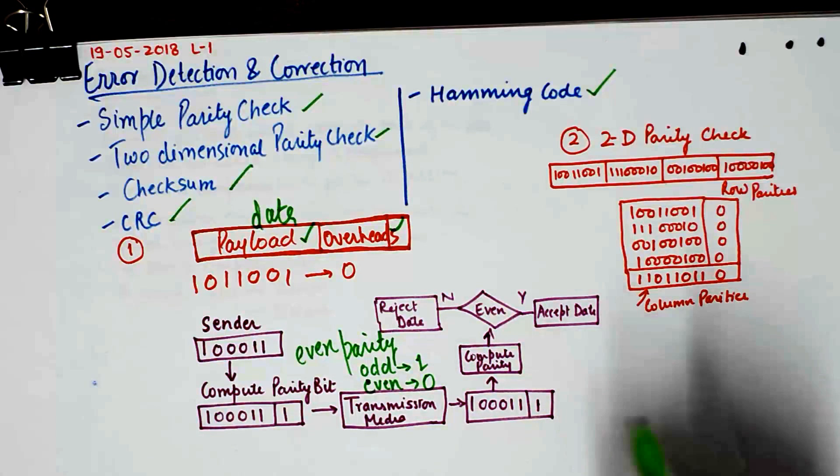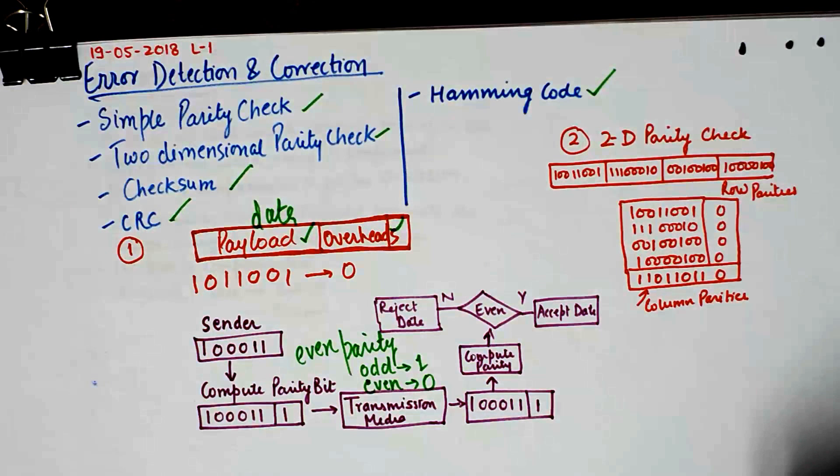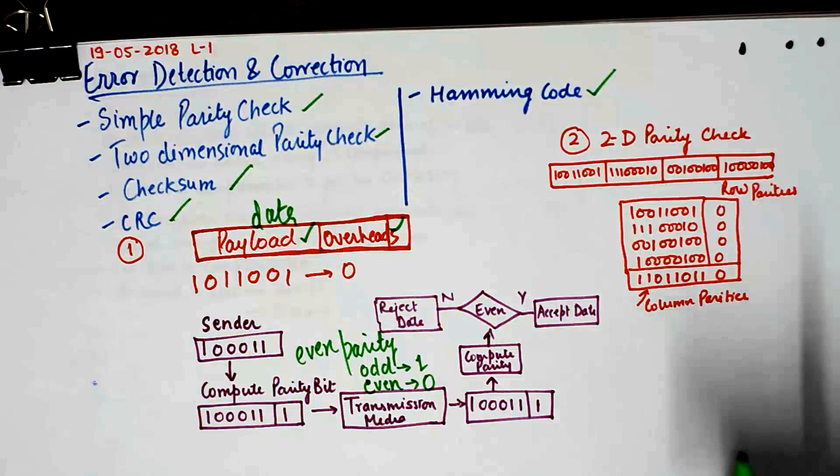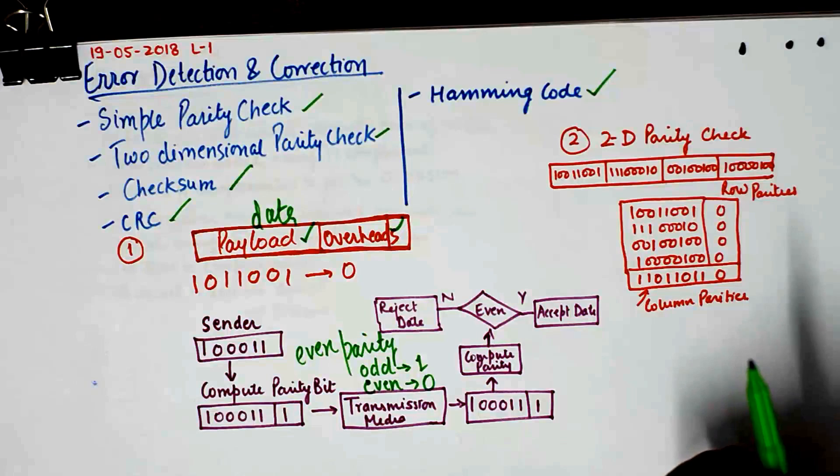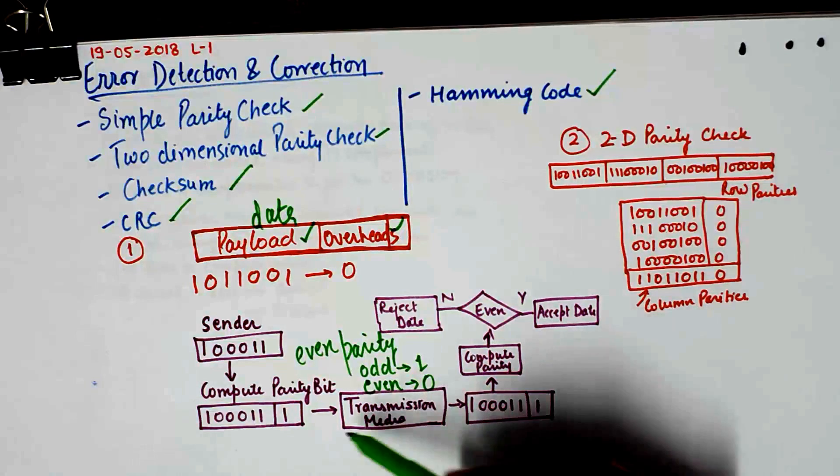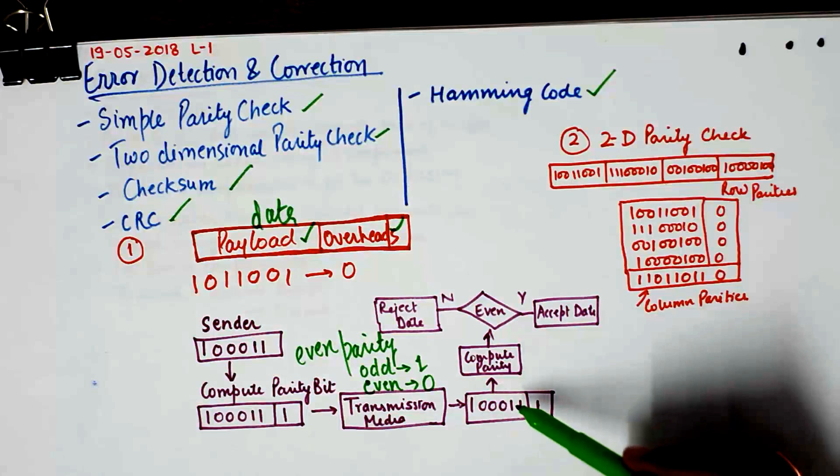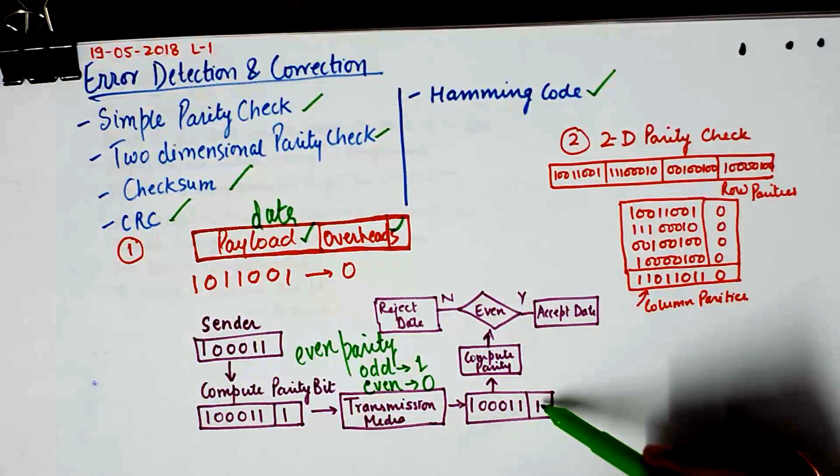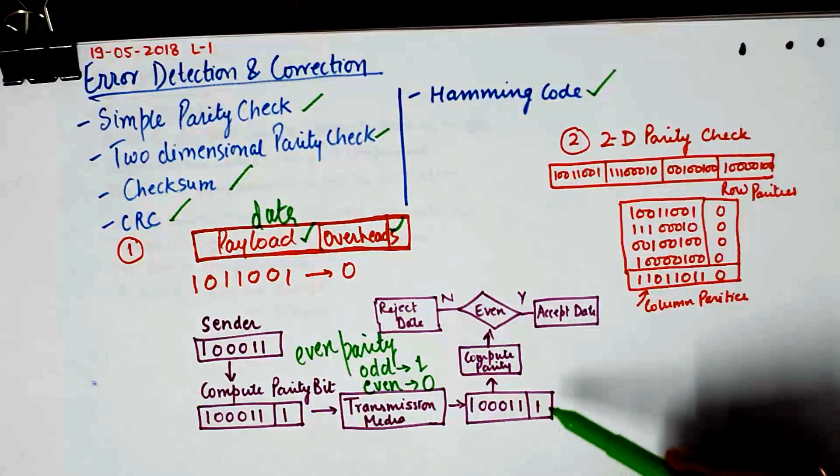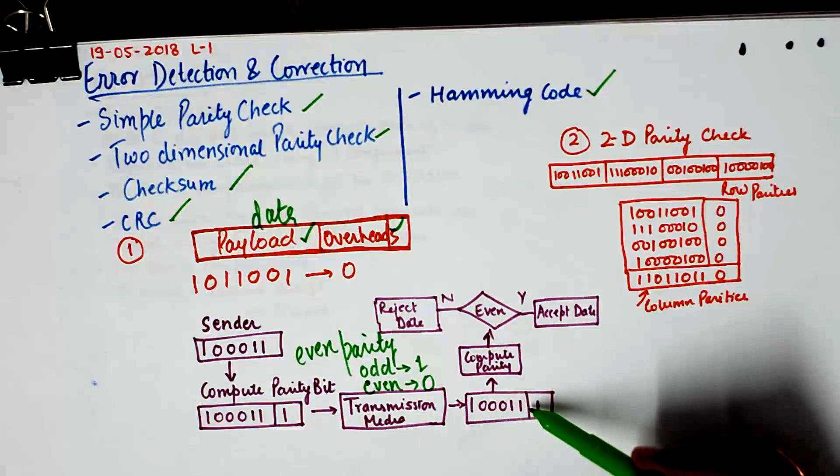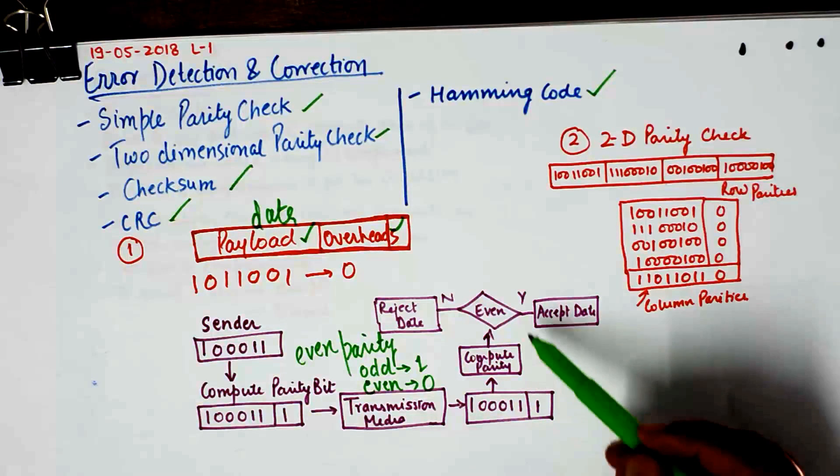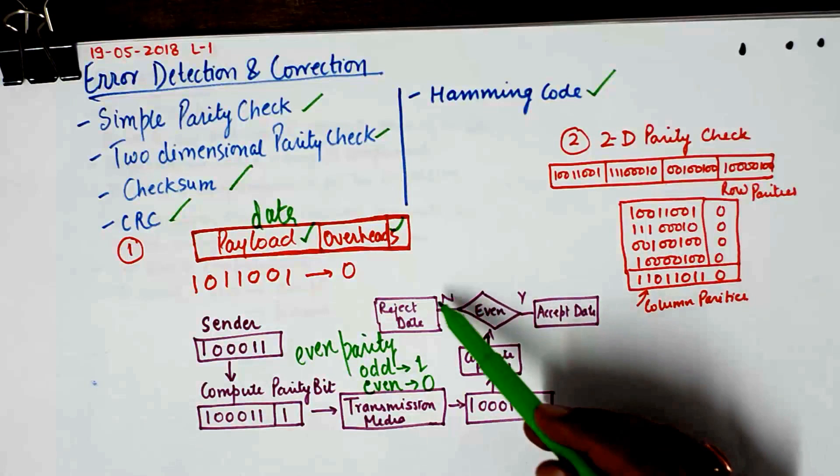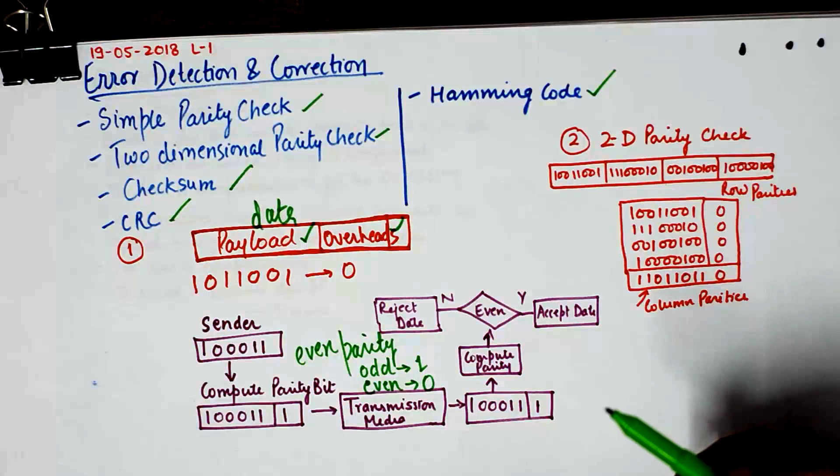So that is what it does. It attaches just one additional bit which is a very small overhead. That could be considered as a positive point of simple parity check. And then it is transmitted and at the receiver end it computes the parity again. If the parity conforms to the number of ones in the received payload, then it accepts the data or rejects the data accordingly.